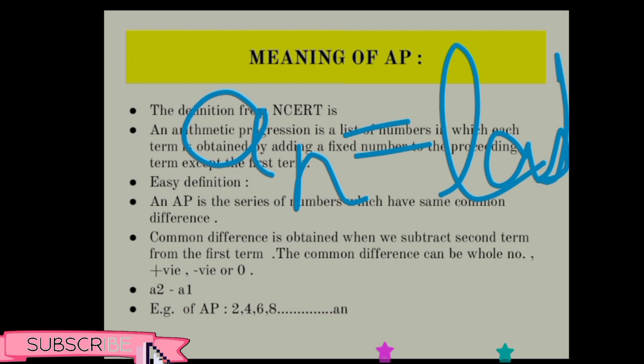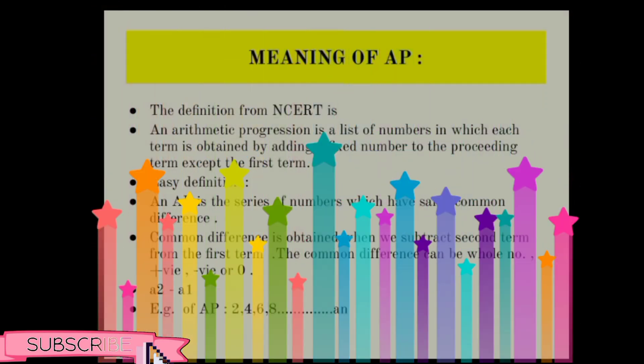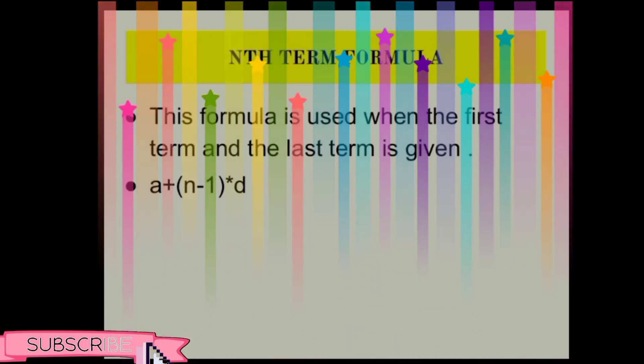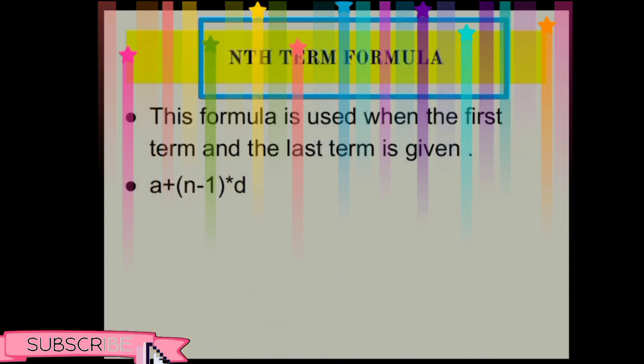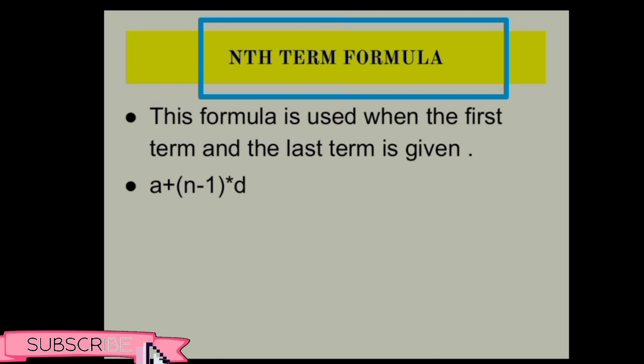Now let's move on to the nth term formula. This formula will be used throughout this chapter. The full formula is: a_n = a + (n-1) × d. This is a very easy formula anyone can learn.